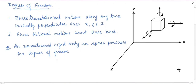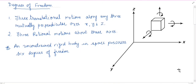As we can see from this animation, an unconstrained body in space can have six independent motions — three translational and three rotational: translational motion along the x-axis, y-axis and z-axis, and rotational motions about the x-axis, y-axis and z-axis. So an unconstrained rigid body in space possesses six degrees of freedom.